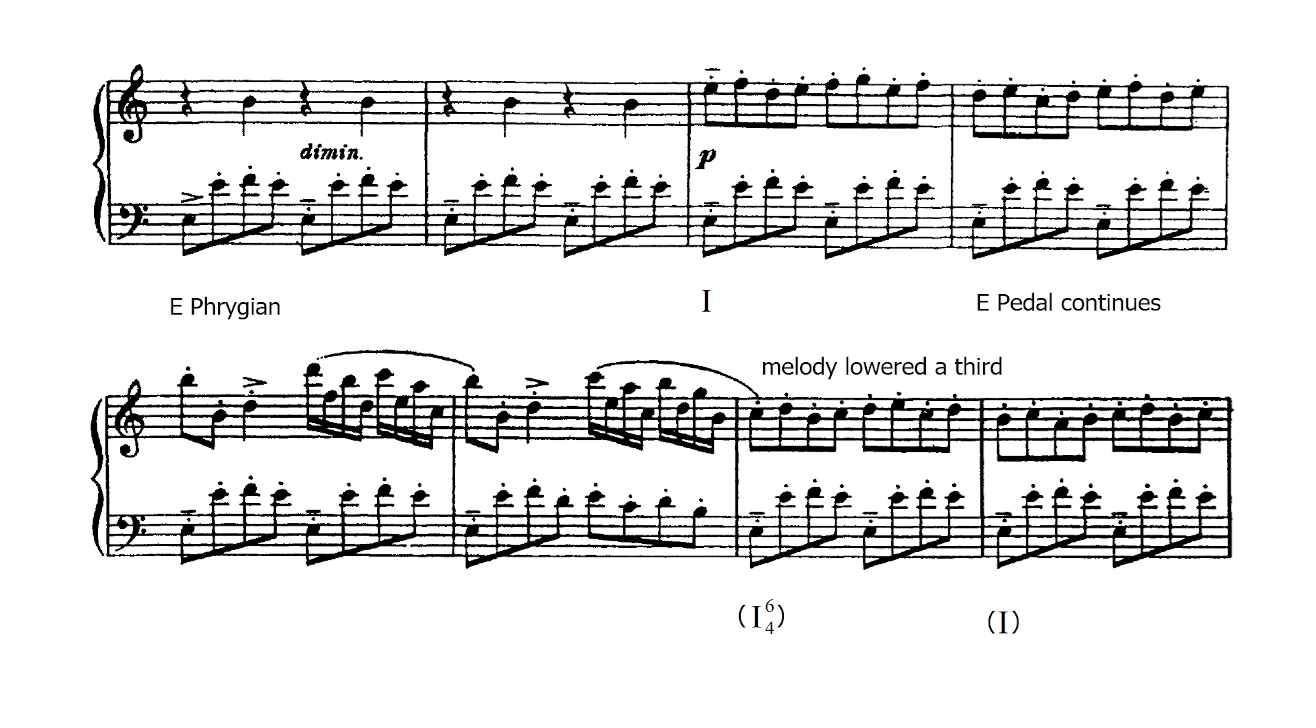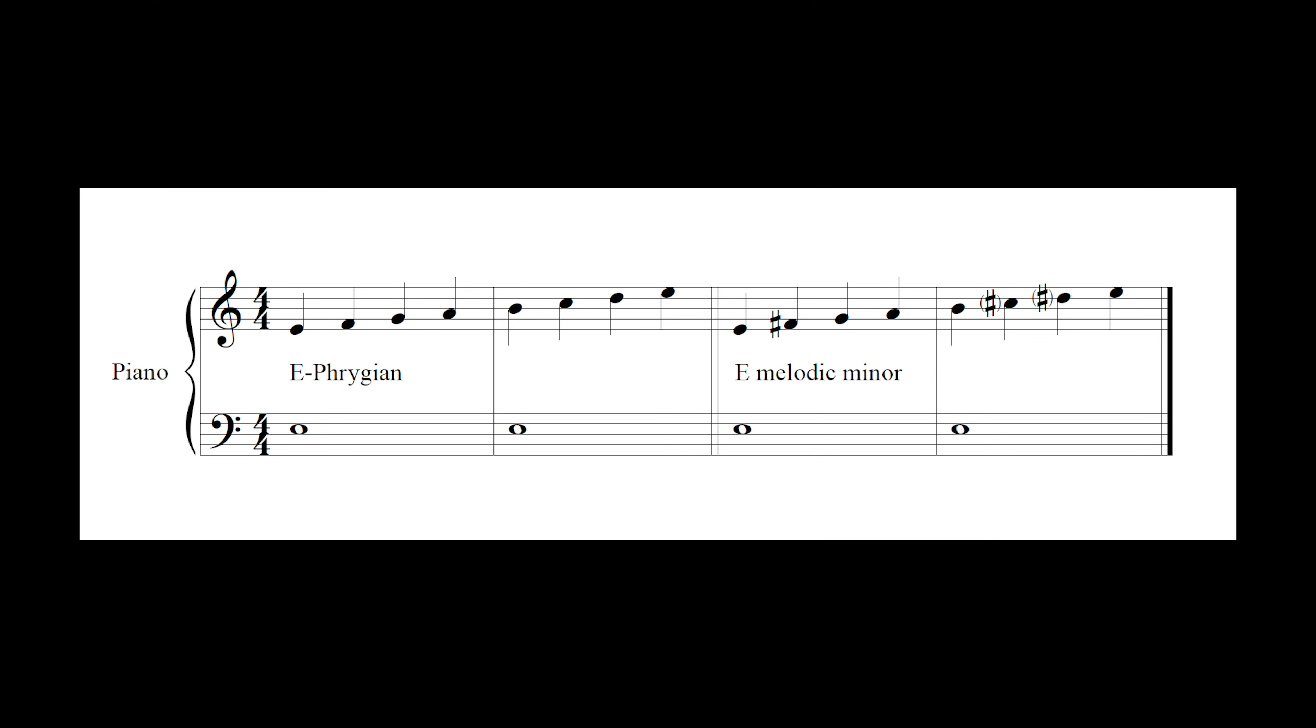So E Phrygian is a church mode, constructed on white keys starting with E here. The characteristic interval of this mode is the second F natural, which is only a semitone above E. In E minor we usually have F sharp, a whole step above E.